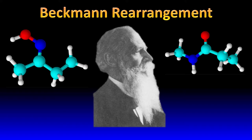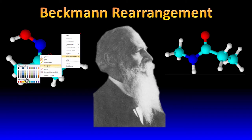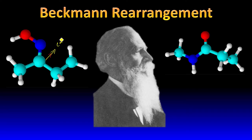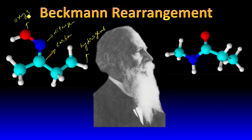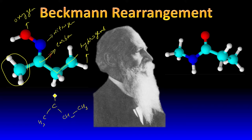Let's understand what Beckmann rearrangement is all about. There are two molecules drawn here. The blue atom is a carbon atom, the white ones are hydrogens, the blue one is nitrogen, and the red one is oxygen. There is a carbon attached, then there is this group CH3, and there is a CH2CH3. The third hydrogen here is behind — it's hidden. And there is a nitrogen.